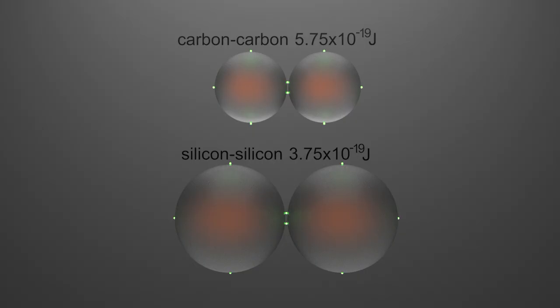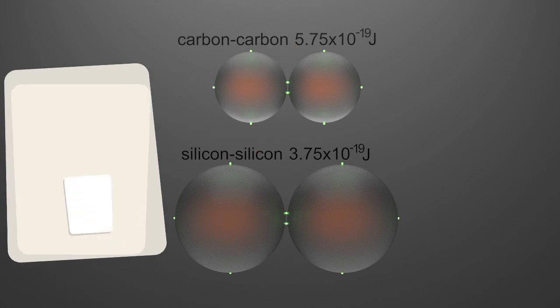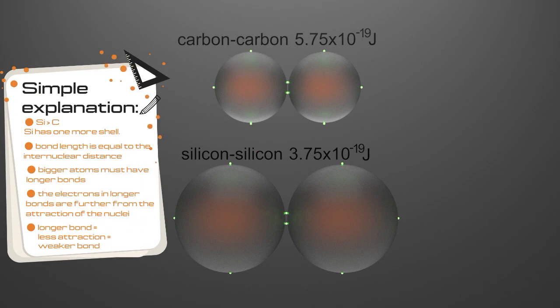This diagram is drawn to scale and you can see that silicon is bigger than carbon because silicon has one more electron shell.